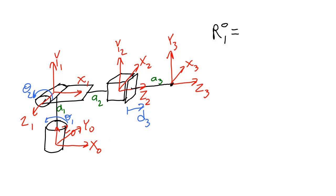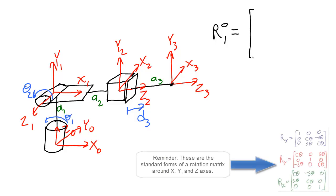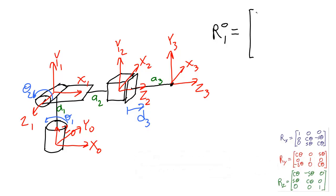So we should be able to get frame zero to match frame one by rotating around x0. We see that if we rotate frame zero 90 degrees around x0, then frame zero would match frame one. So the first thing we do in our rotation matrix is write the rotation that represents a 90-degree rotation around x. We go get the standard form of the matrix for a rotation around x and plug in 90 for theta.